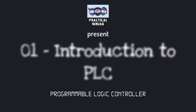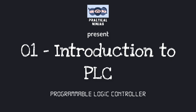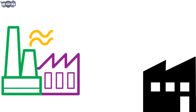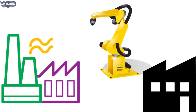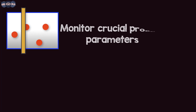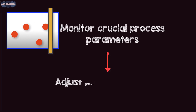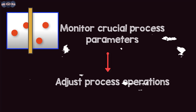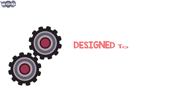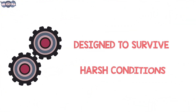Hello viewers, today we will talk about a special device which is extensively used in manufacturing and automation. Its purpose is to monitor crucial process parameters and to adjust process operations accordingly. It is specially designed to survive in harsh conditions and shielded from heat, cold, dust, and moisture.